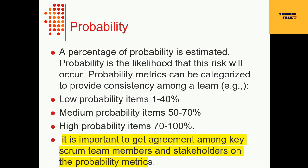What is probability? A percentage of probability is estimated — it is the likelihood that the risk will occur. Probability metrics can be categorized to provide consistency among a team. For example: low probability items can be categorized as 1–40%, medium probability as 50–70%, and high probability as 70–100%. It is important to get agreement among key Scrum team members and stakeholders on the probability matrices.